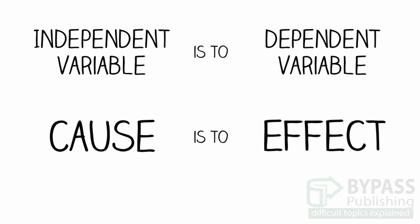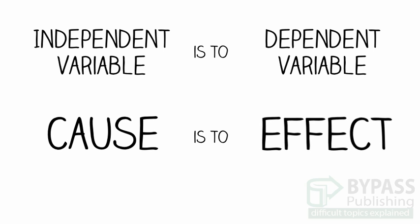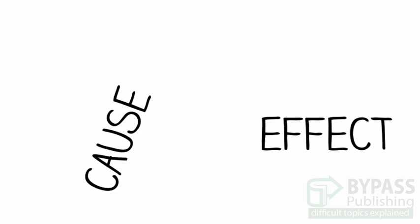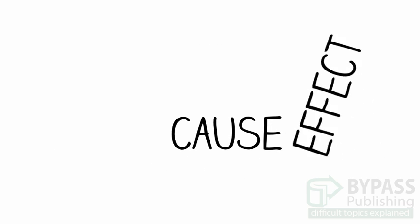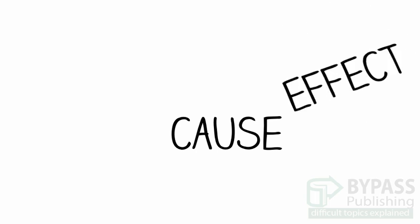In a nutshell, independent is to dependent as cause is to effect. Another way of thinking about it is that cause happens before effects. You have to do something first to get a result.